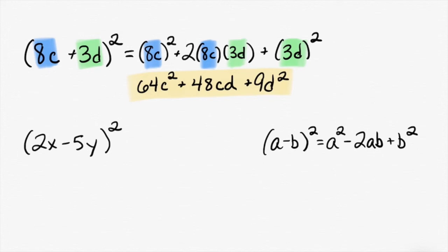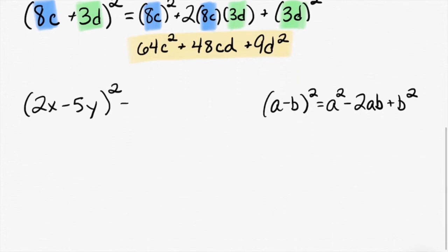Still plus b squared on the end. Again, I could do 2x minus 5y times 2x minus 5y and do the distributive property. It's totally fine. Wait, what about the whole thing? Just the thing in the middle is minus. The thing on the end is plus. Here's why.